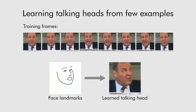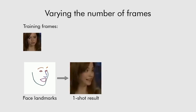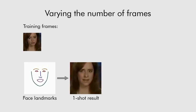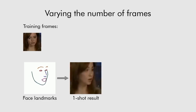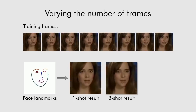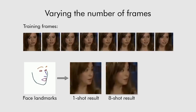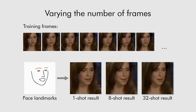Our system can learn from different numbers of frames. One-shot learning from a single frame is possible. Of course, increasing the number of frames leads to head models of higher realism and better identity preservation.